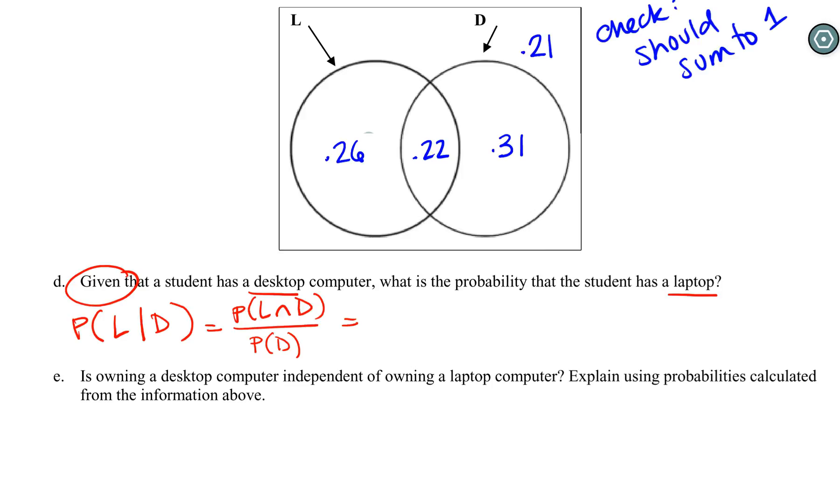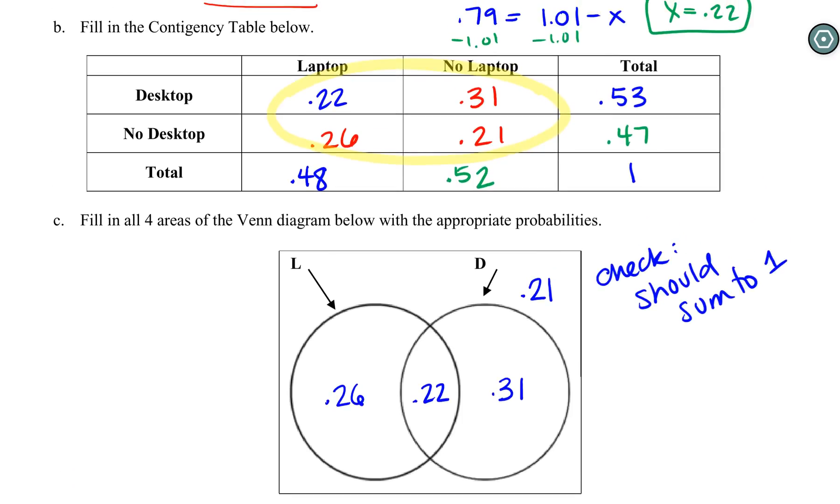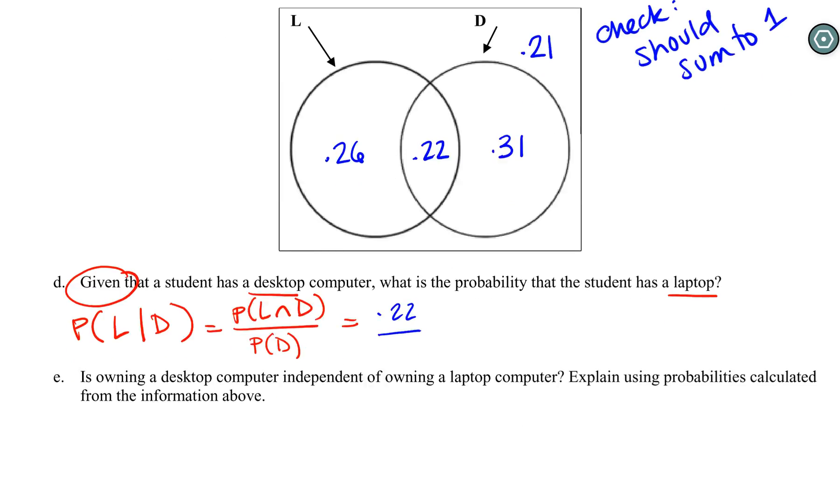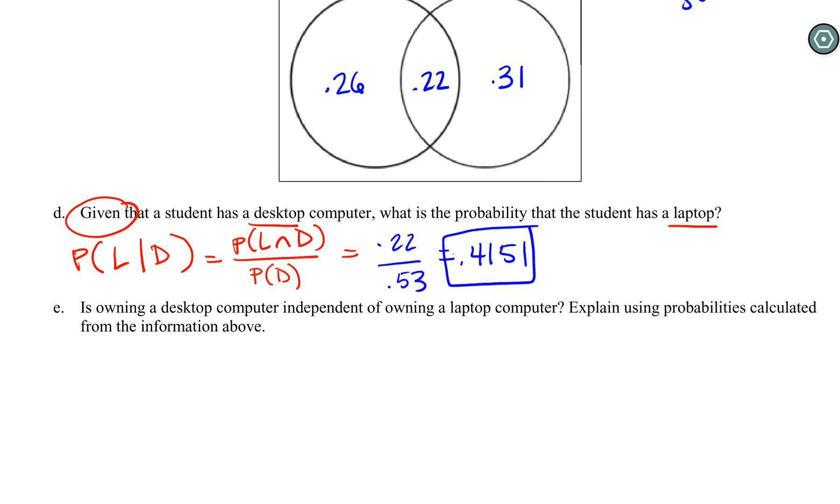Here's where I would give you caution for using the Venn diagram. Here's the mistake students make: L and D we got pretty well, 0.22, but for D they make the same mistake they make when they fill it in—they go 'oh cool, that's D, 0.31'—but in reality D is both of these things. It's a lot easier to not make that mistake if you're using the table, because in the table we can see that 0.31 is desktop and no laptop. What we really want is that 0.53. We need our 0.53, and then we calculate that out.